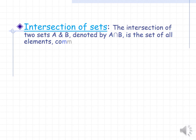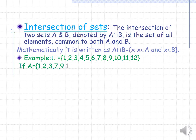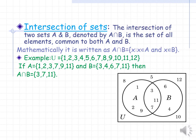Intersection of sets. The intersection of two sets A and B, denoted by A ∩ B, is the set of all elements common to both A and B. Mathematically, it is written as A ∩ B = {x : x ∈ A and x ∈ B}. For example, using the universal set of numbers 1 to 12, if A = {1, 2, 3, 7, 9, 11} and B = {3, 4, 6, 7, 11}, then in A ∩ B we put all elements which are in both A and B. So 3, 7, and 11 are in both A and B, and we place them in A ∩ B. In the Venn diagram, the overlapping portion of the circles represents A ∩ B.